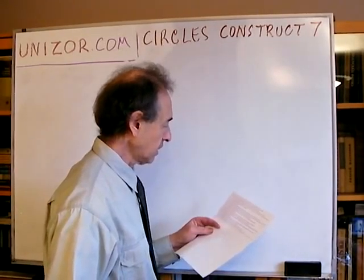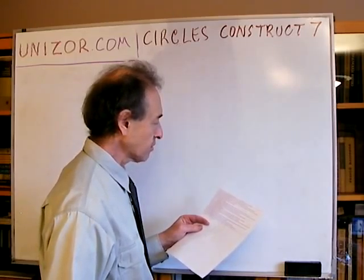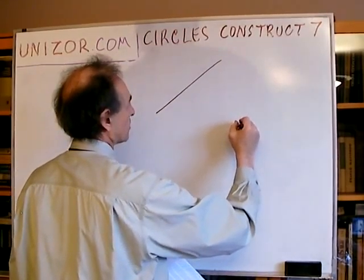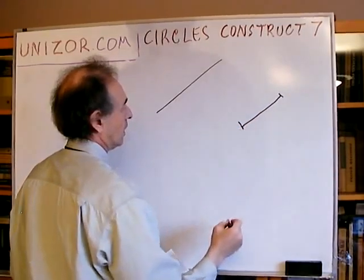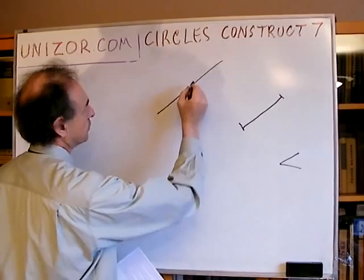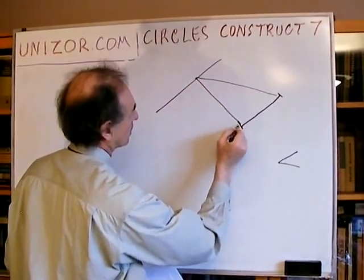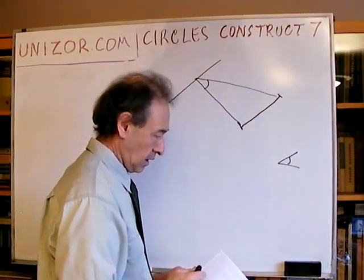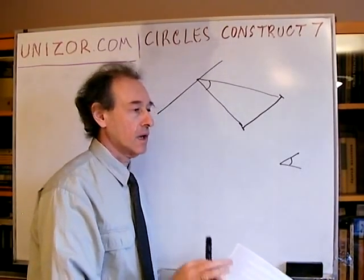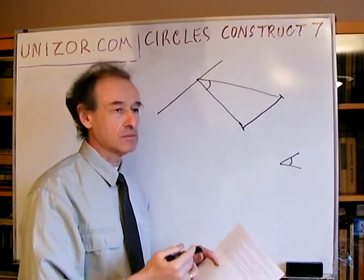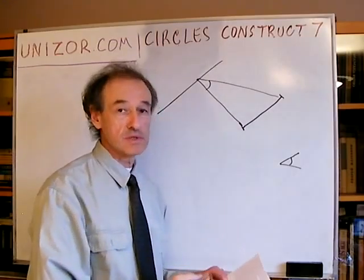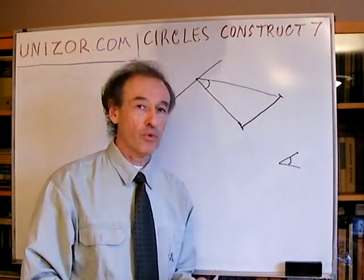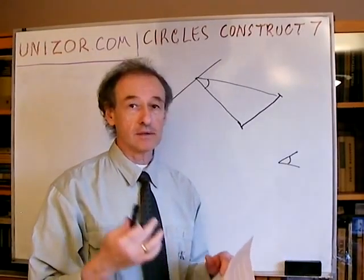Find a point on a given line such that a given segment is viewed from this point at a given angle. So you have a line, you have some kind of a segment, and you have an angle. You have to find a point from which this segment is viewed at this particular angle. It's actually a very easy task, but to solve it, I would like to introduce a general concept first, which will be used in some other problems as well. So the problem is: find the locus of all points from which a given segment is viewed at a given angle.